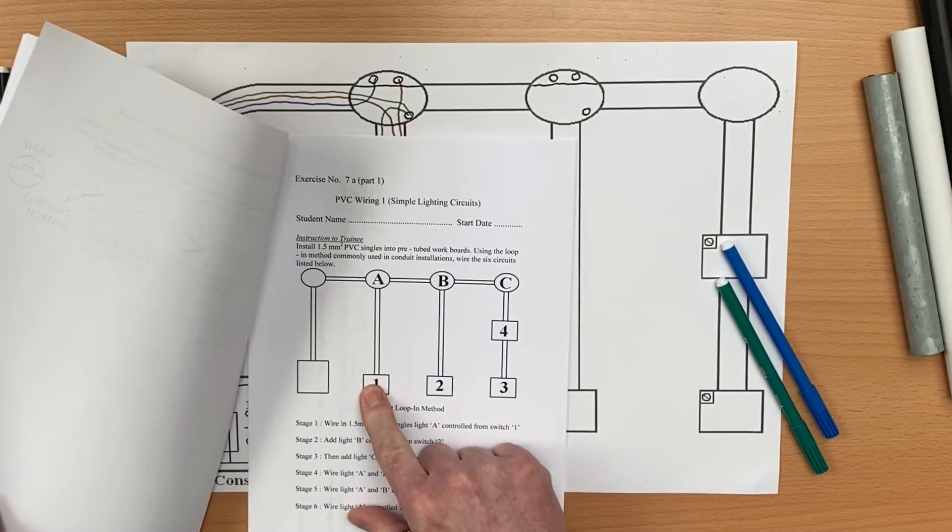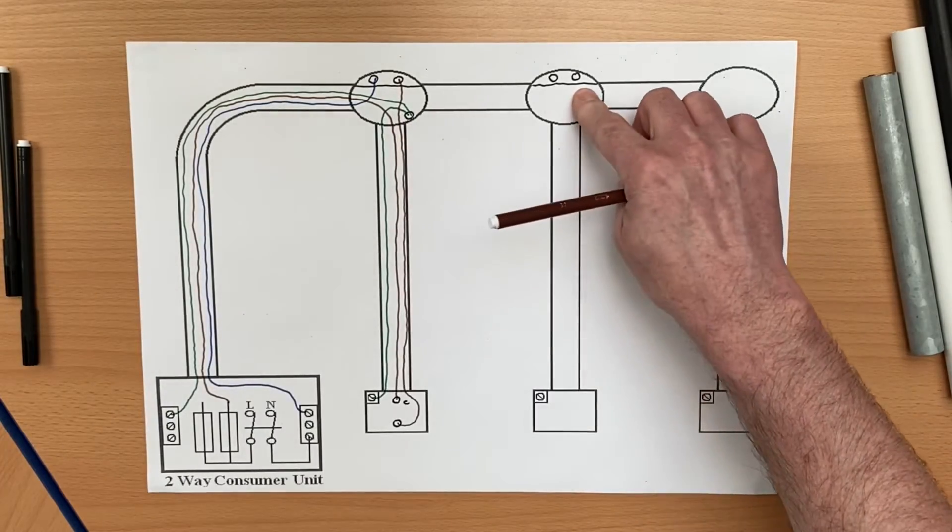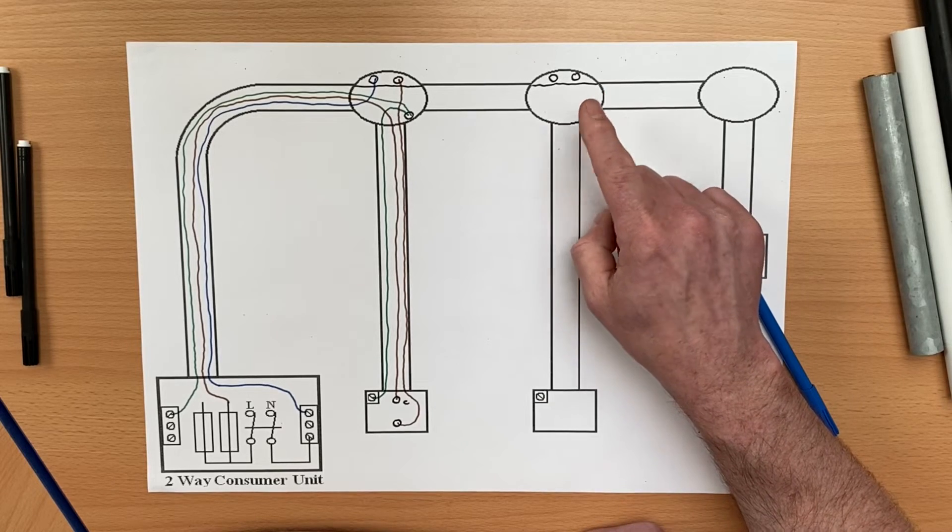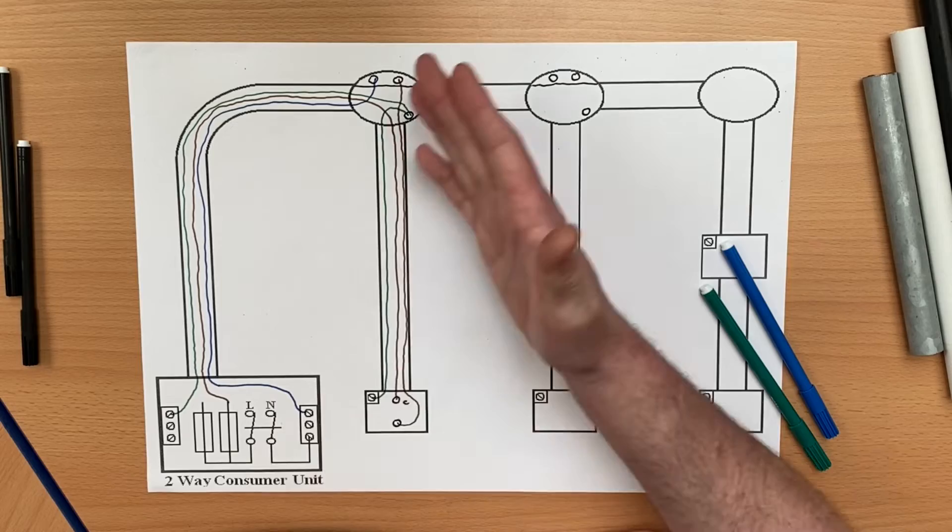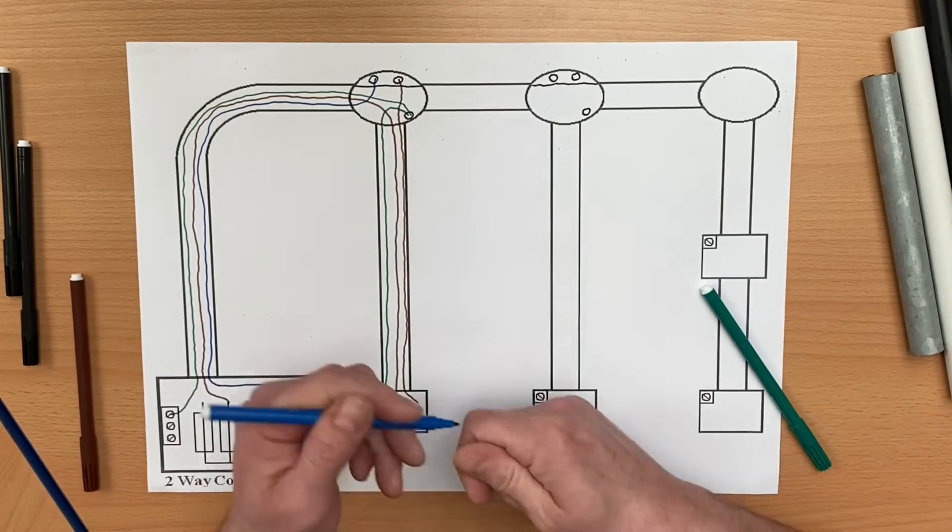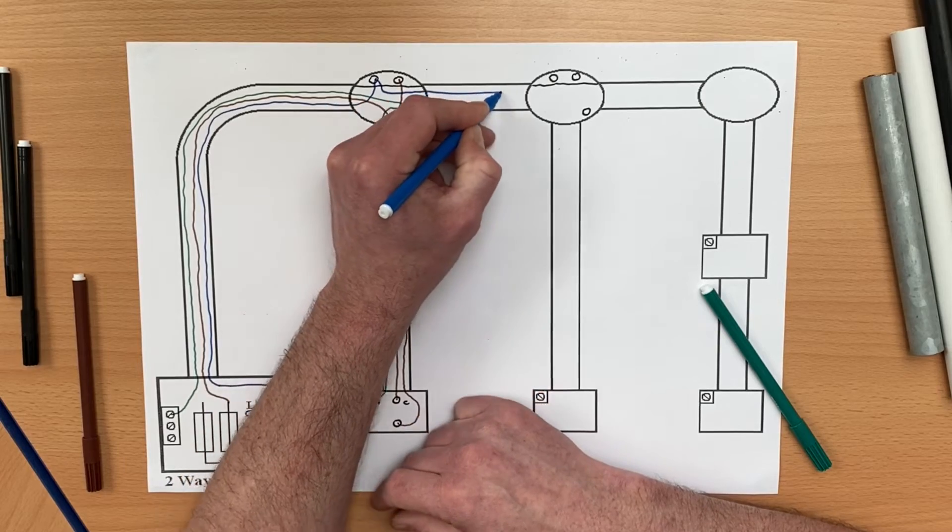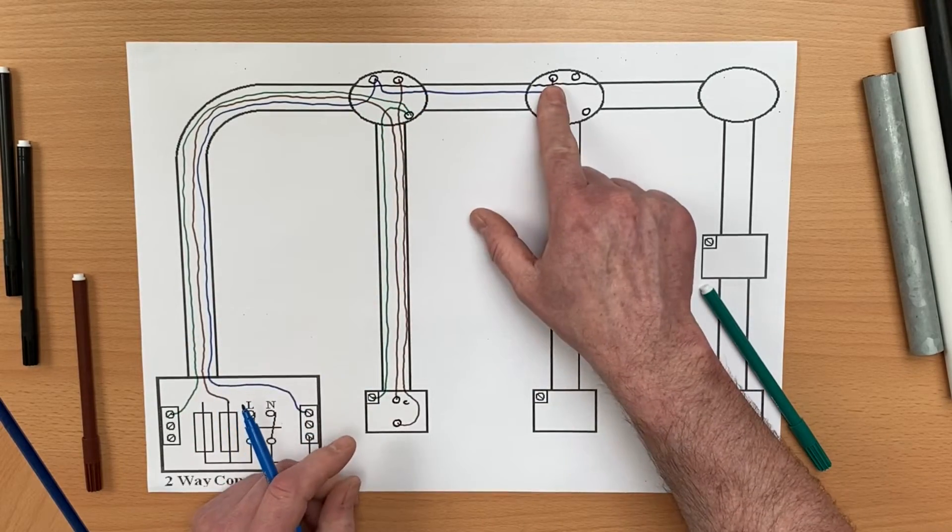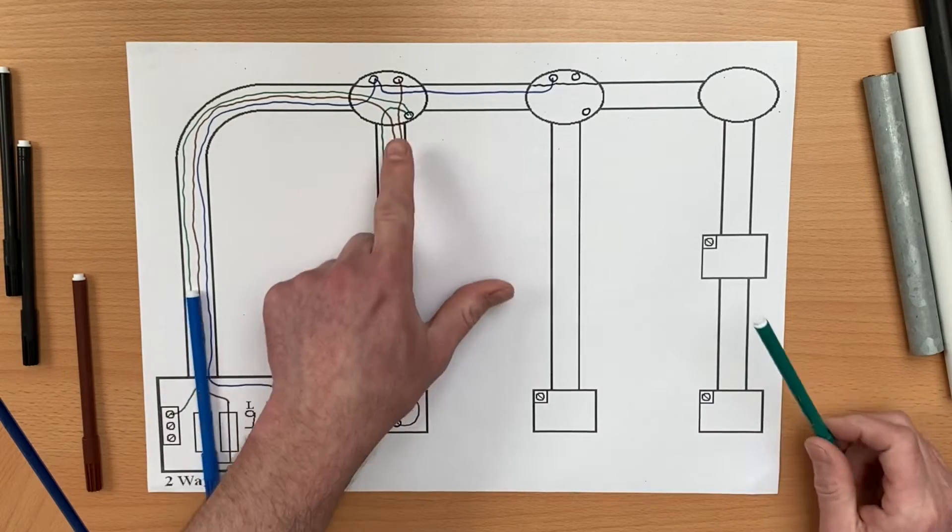However, for stage 4 of your practical exercise book, which is in here, stage 4 requires this switch to turn on two lighting points. So this lighting point here will need a neutral, a CPC, and the same switching line conductor that this circuit had. Let's start off by doing the neutral. We're familiar with the fact we take our closest neutral, so we take a neutral out of here in PVC singles and we drop it off there.